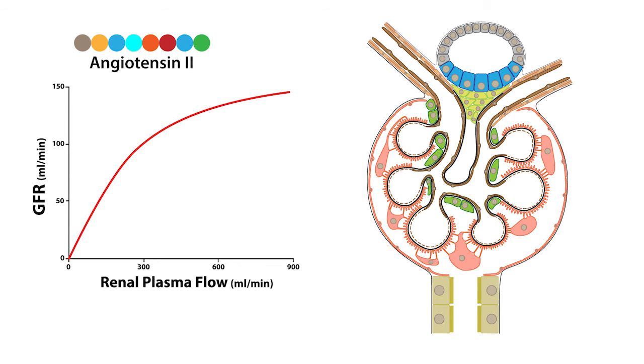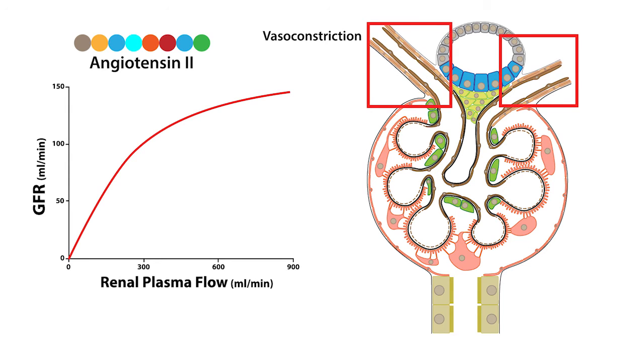Angiotensin-2 decreases GFR by promoting the vasoconstriction of the afferent and efferent arterioles, which reduces renal plasma flow, which automatically leads to a reduction in GFR.